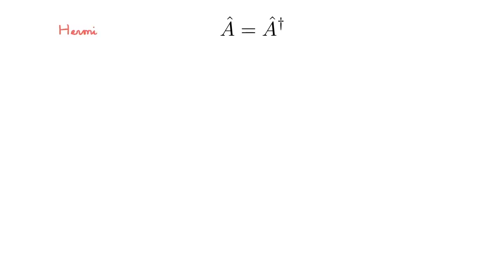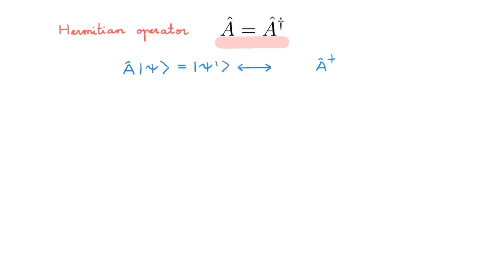A Hermitian operator A is an operator that is equal to its adjoint. Remember from the video on operators that if an operator A acts on a ket psi to give another ket psi prime, then in the dual space the adjoint operator A dagger is the operator that acts on the bra psi and gives the bra psi prime. An immediate implication of A being Hermitian is that we can rewrite this as the operator A acting on the bra psi and giving the bra psi prime.